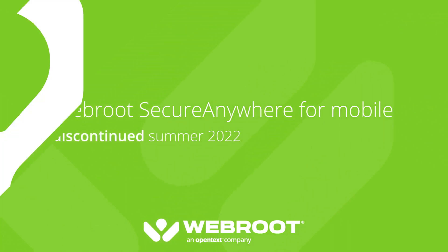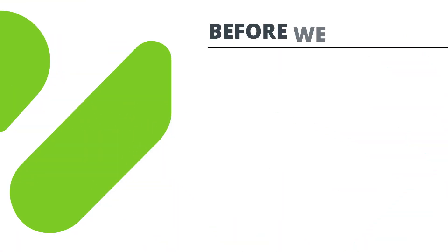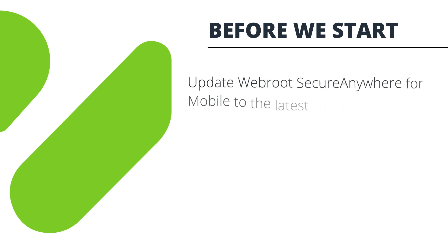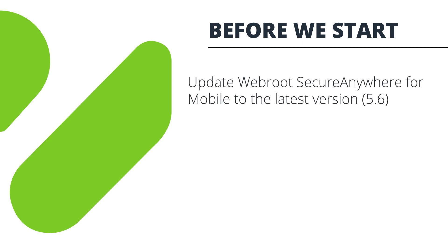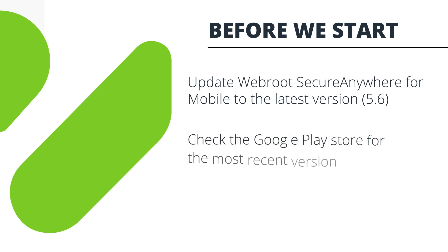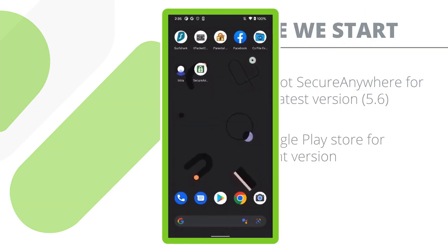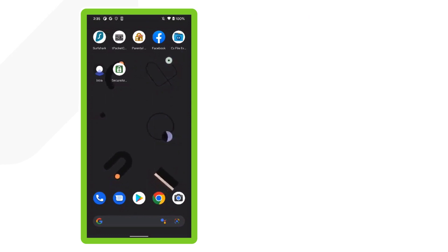In order to upgrade to the WebRoot mobile security solution, you must first update WebRoot Secure Anywhere for mobile to the latest version 5.6. Check the Google Play Store to ensure you're on the most recent version.